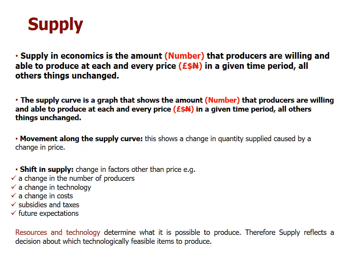Supply in economics is the amount in terms of number that producers are willing and able to produce at each and every price — in terms of currency — in a given time period, or other things being unchanged. Let's have an example: say you walk into Tesco and you want to buy pens.